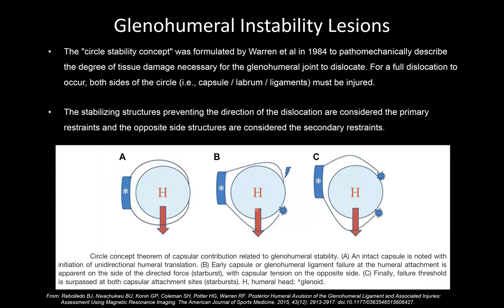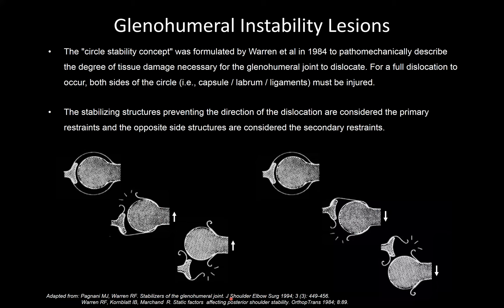This concept from Dr. Spotter and Dr. Warren of HSS helps us understand the pathophysiology and provides a mental checklist. We should always look on both sides of the joint to ensure we are not missing injuries on the secondary restraints or the opposite side of the dislocation direction.